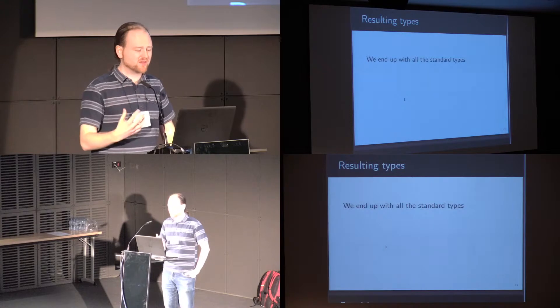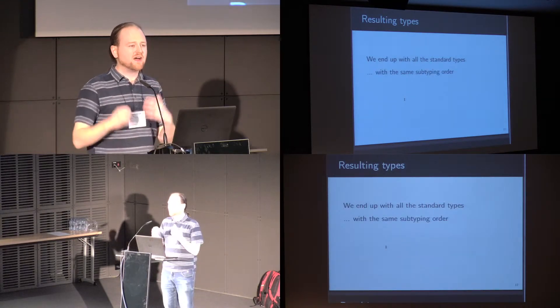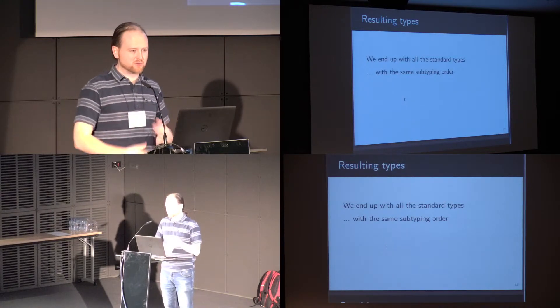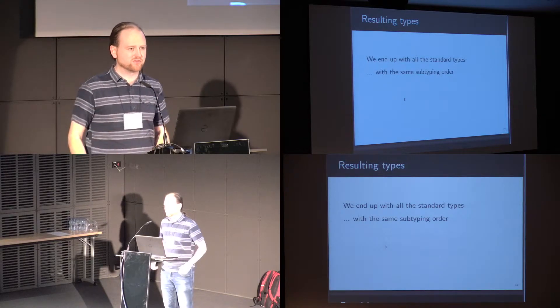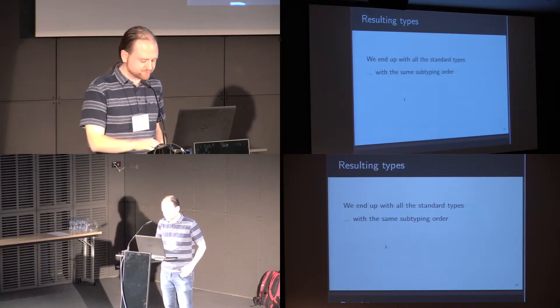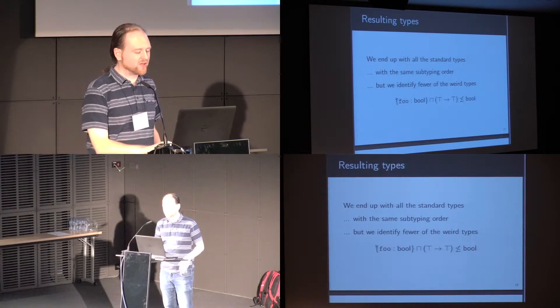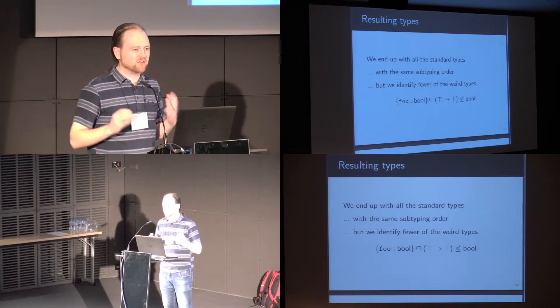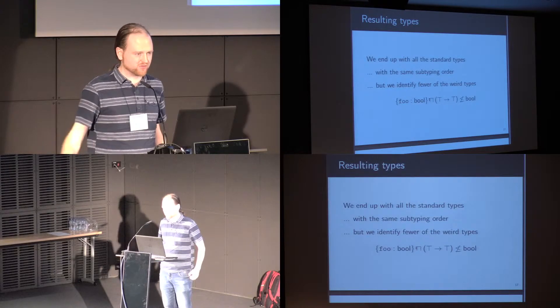So what do we end up with? The standard types that we had before: records, booleans, and functions, and they have the same subtyping order within themselves. The subtyping rule for records is the standard subtyping rule for records and the subtyping rule for functions is the standard subtyping rule for functions. But we identify fewer of the strange types. The type of things which are both records and functions top to top is added freely as an object in its own right and not considered the same as the bottom type.